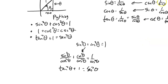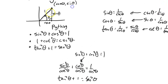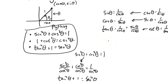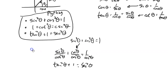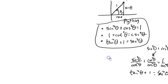Just off of this one picture, I get three different Pythagorean identities. These are things to look for. What I'm always looking for is: is something squared, and is there a 1 involved? That's really it.